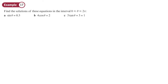Let's look at the first one, where we've got sine theta equals 0.3, and we look at the interval between 0 and 2π. We want to find all the solutions. The first thing you want to do is find the first solution with our calculator in radians mode and find the sine inverse of 0.3. So sine inverse 0.3 gives us 0.304.